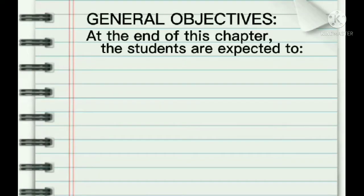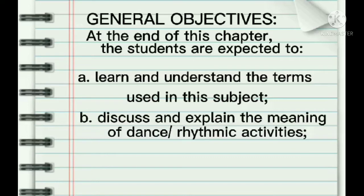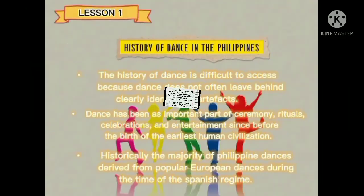For our general objectives, at the end of this chapter, students are expected to: A. Learn and understand the terms used in this subject. B. Discuss and explain the meaning of dance or rhythmic activities. And C. Show interest and appreciation through participation in class activities.